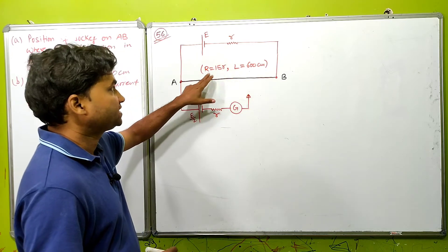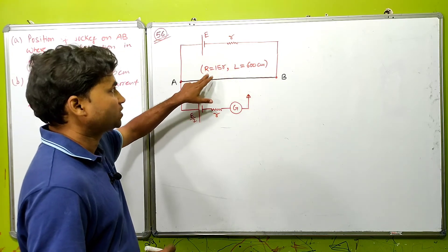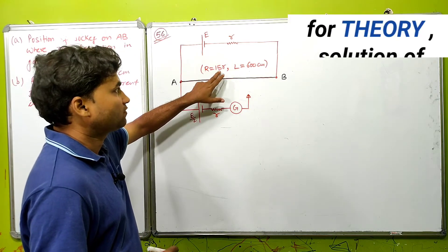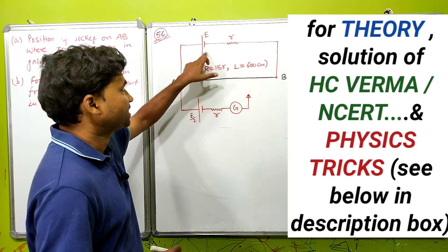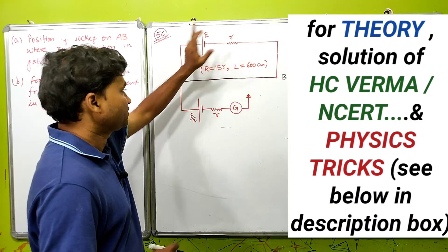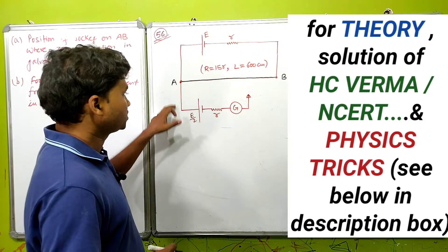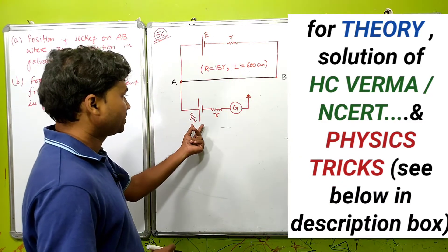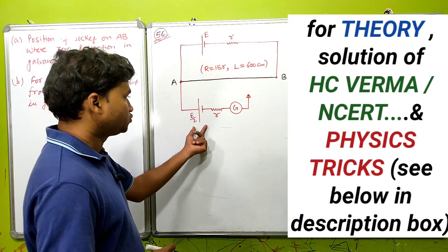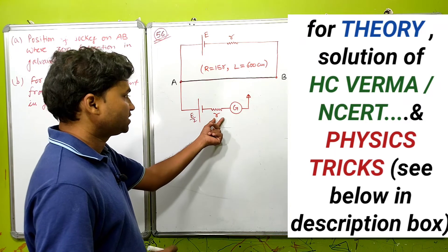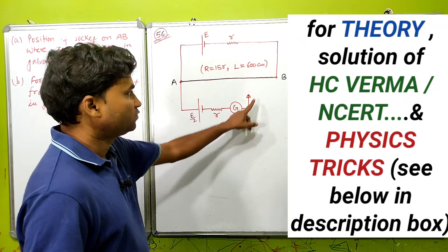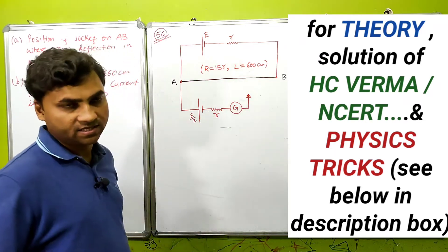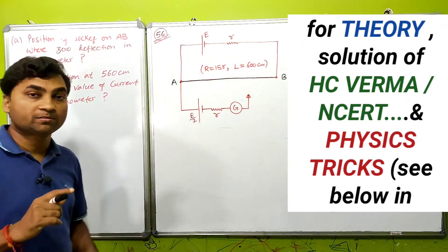The total resistance R is 15R, which is the internal resistance of EMF E. The battery has EMF E with internal resistance R, and the galvanometer is connected in the circuit.